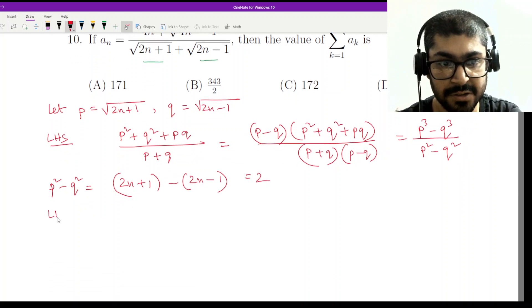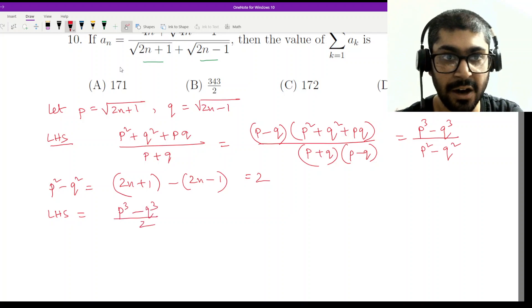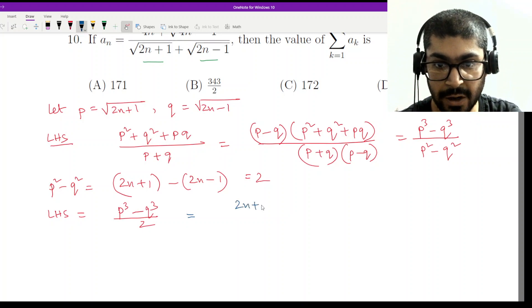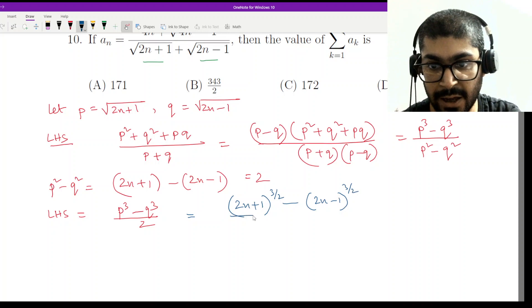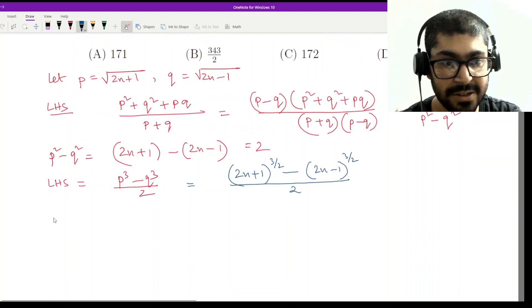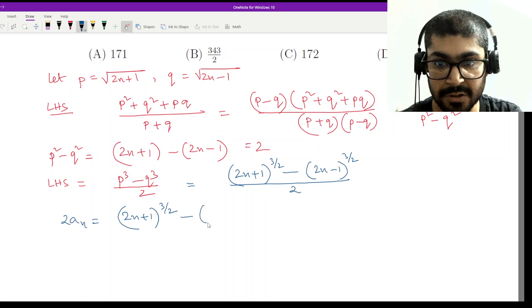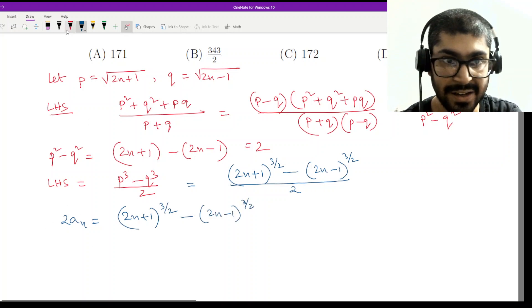So the LHS becomes p cube minus q cube by 2. Now if I put in the original values I have 2n plus 1 to the power 3 by 2 minus 2n minus 1 to the power 3 by 2 and whole divided by 2. So therefore my expression simplified to 2 times a_n equal to 2n plus 1 to the power 3 by 2 minus 2n minus 1 to the power 3 by 2. Remember we have this 2 on the left hand side.